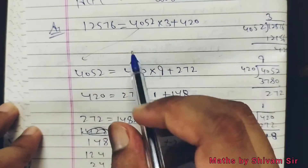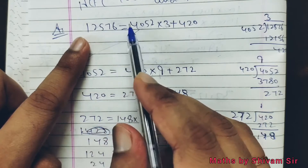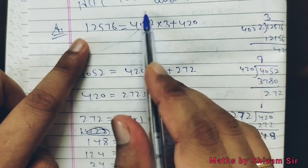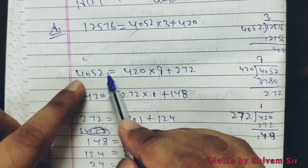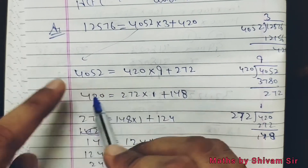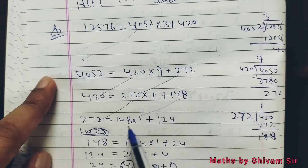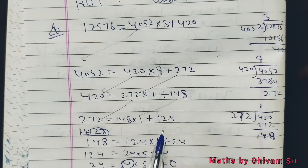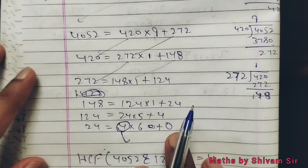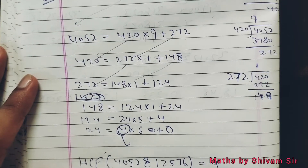To is tarah se aapko steps follow karni hain. Bade wale number ko hamesha pehle rakho: is equal to this number multiplied by quotient plus remainder. Phir isi chain of sequence ko follow karo jab tak remainder 0 na bach jaye. The moment we get remainder 0, that number will be the HCF. So HCF of these two is 4.